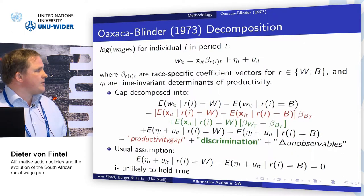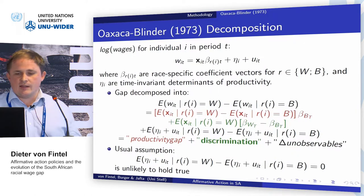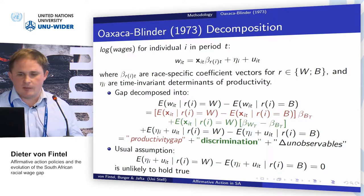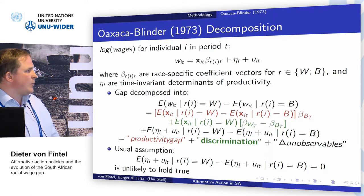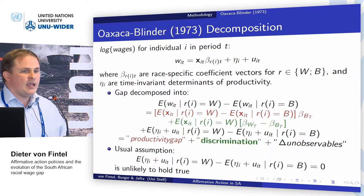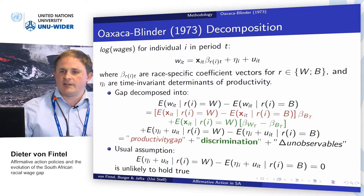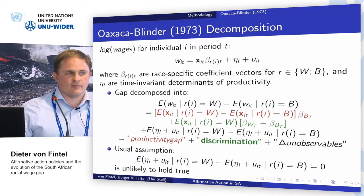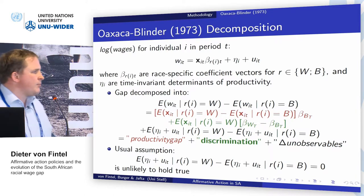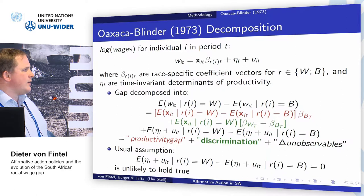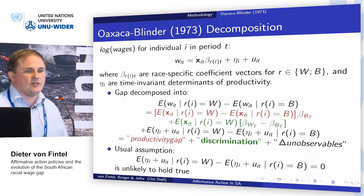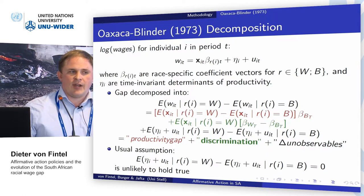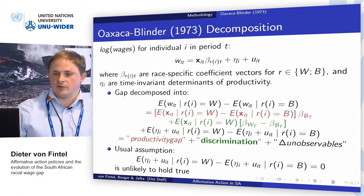Typically when people look at survey data they turn to the Oaxaca-Blinder decomposition. They decompose wage gaps into observable components and unobservable components, and the unobservable component is then seen as discrimination. But the important part we often don't think about is that unobservables are not randomly distributed across racial groups.